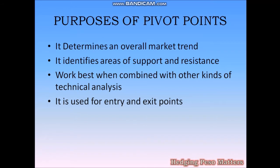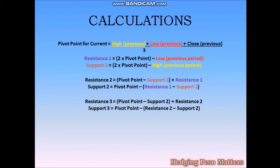Pivot points work best when combined with other kinds of technical analysis, and it is used for entry and exit points. I am using Ichimoku, so that's what we'll use in combination or in conjunction with the pivot points — Ichimoku plus pivot points as our technical analysis indicators. Here are the calculations: to get the pivot point, we add the previous day's high plus the previous day's low and the previous day's close and we average them. To get Resistance 1 and Support 1, here is the formula, and so on.